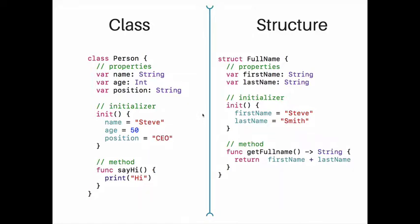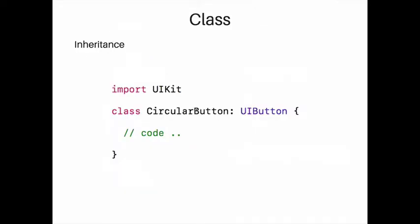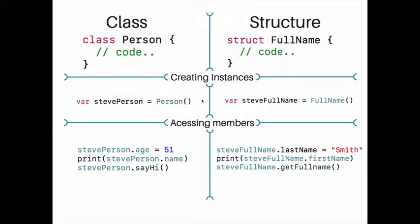Both allow us to model the problems of our application. One key differentiation is that classes allow inheritance — you can use a class and inherit characteristics from another class. It's important to note that structures do not allow inheritance, but classes do.